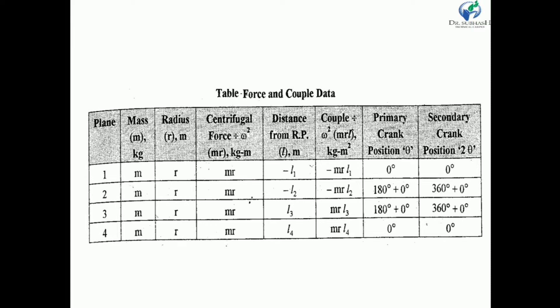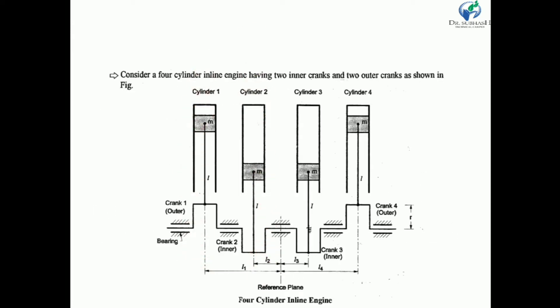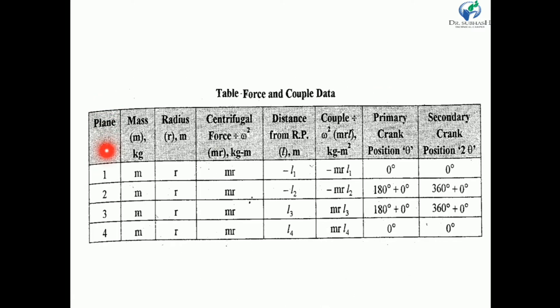Let us calculate the data for force and couple in the form of a table. There are 4 cylinders, so we consider all cylinders are in a plane — 4 planes: 1, 2, 3 and 4. The mass in each cylinder is m, the reciprocating mass. All four cranks have the same radius r, so the centrifugal force (without ω²) is m·r for all planes.